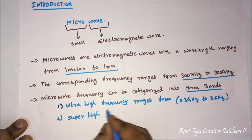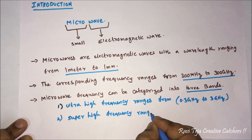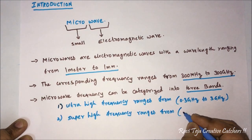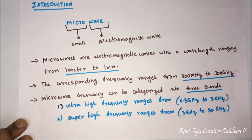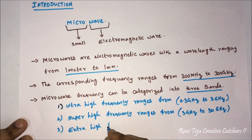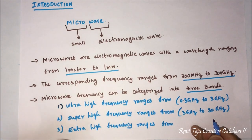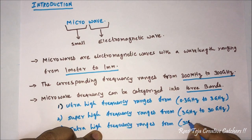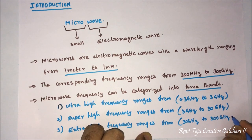The second band is Super High Frequency, which ranges from 3 gigahertz to 30 gigahertz. The third band is Extra High Frequency, which ranges from 30 gigahertz to 300 gigahertz.